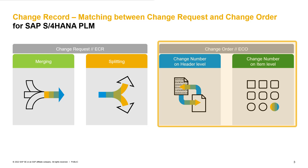On item level, the change number generation is handled per item processing status. So for example, once the processing status 'change started' is maintained on an item, then generate a change number for this item and attach it to the change record. I will explain this in more detail in my demo. If you are interested in what kind of different statuses we have in our change record application, you can watch the customizing video of our status explanations.